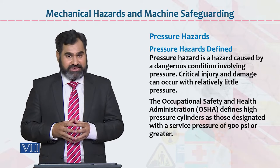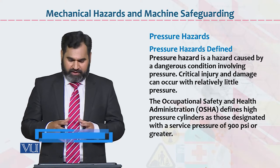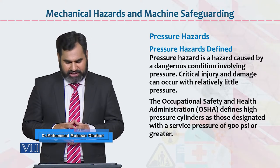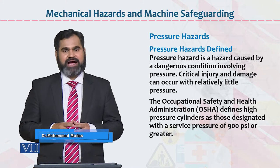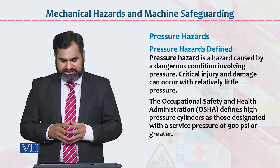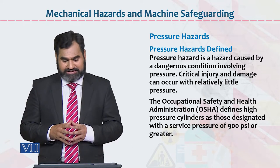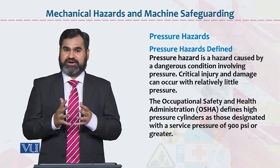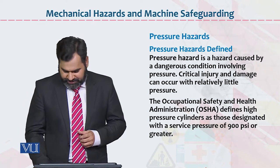Critical injury and damage can occur with relatively little pressure. Occupational Safety and Health Association ke mutabiq, high pressure cylinders are defined as those designated with a service pressure of 900 PSI or greater. Agar koi service pressure 900 ya usse zyada hai toh us ko hum log pressure hazards bolta hain.